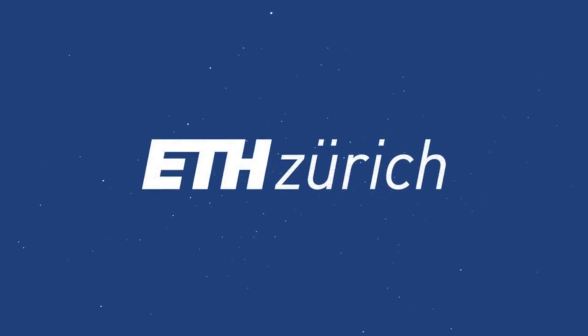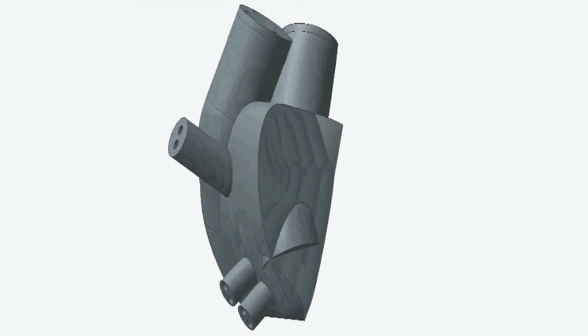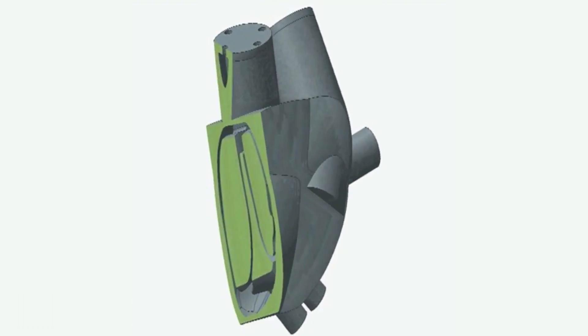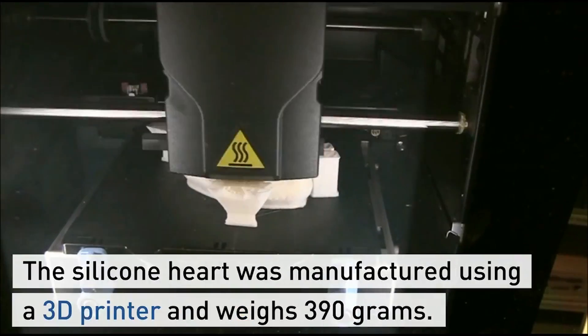The Functional Materials Laboratory over at ETH Zurich have 3D printed a silicone heart that actually has a heartbeat. This 3D printed heart is a first of its kind.